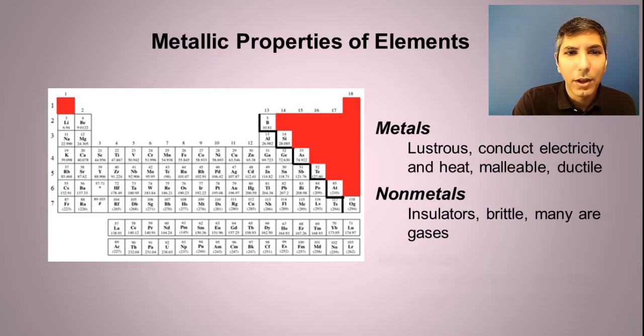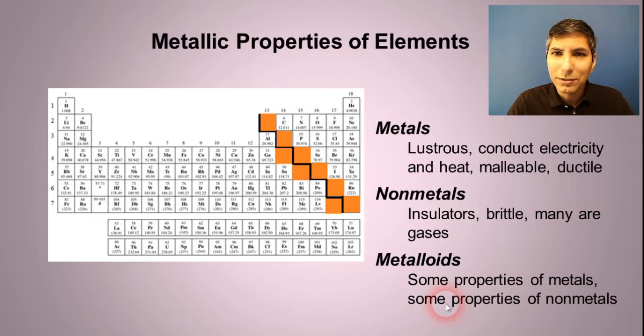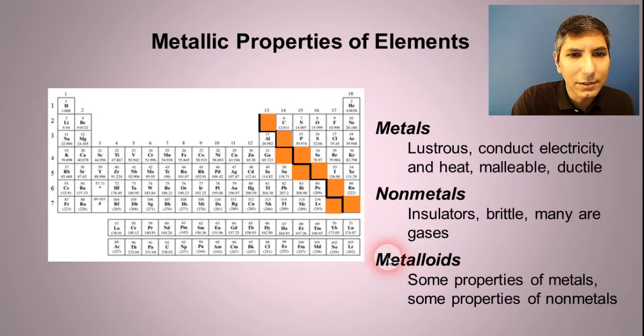Now notice that there are a few that we didn't talk about. Those are the ones that are touching the stair-step line with the exception of just a couple. Those are the metalloids. They have some properties of metals, some properties of non-metals. We sometimes call those semiconductors because under certain circumstances they conduct. Sometimes they don't. The ones that touch the stair-step line, generally except for aluminum and polonium, those are the metalloids.